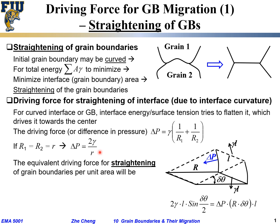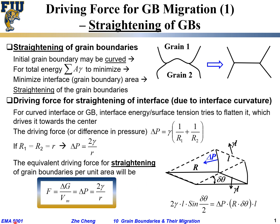That pressure difference drives — in the case of a liquid film — shrinkage, and in our case it drives the curved grain boundary to straighten up. This delta P is the driving force to straighten the grain boundary. Per unit area, delta P equals 2 gamma over r, which equals delta G over Vm. This is the driving force for the case of straightening of the grain boundary.